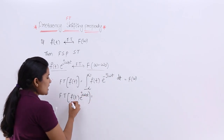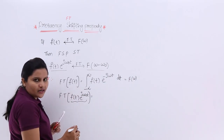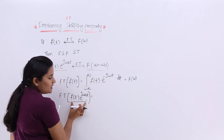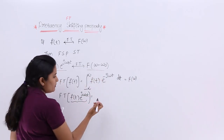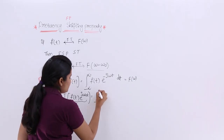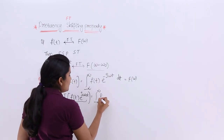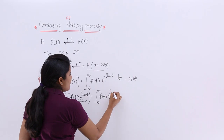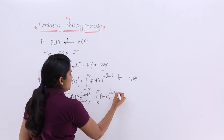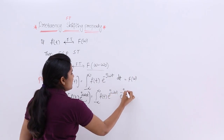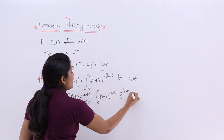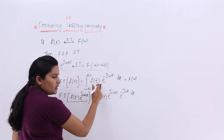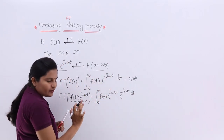If they are asking for the Fourier transform of this function, in the place of the function you need to replace it. That means: integral from minus infinity to infinity of f(t)·e^(jω₀t)·e^(-jωt) dt, the remaining is the same.